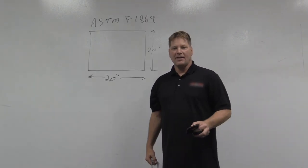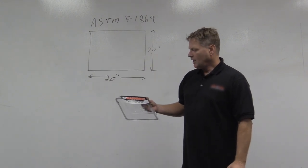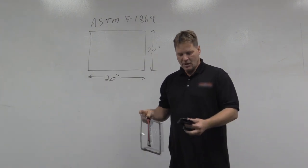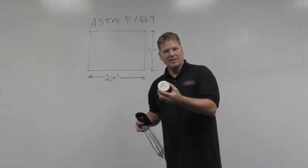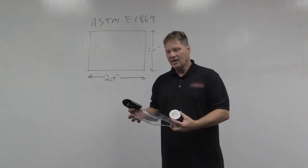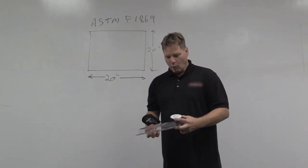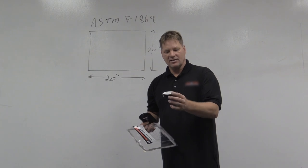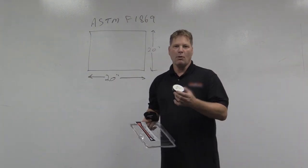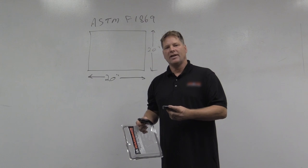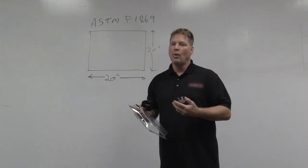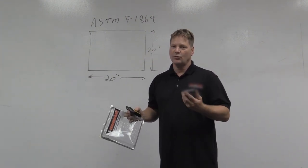To conduct ASTM F1869, you need this housing along with the anhydrous calcium chloride and a scale. It's important when you pull this out of its disc to weigh it, even though the manufacturer has already marked a weight, to make sure that it hasn't picked up any weight gain and that your scale is reading the same.